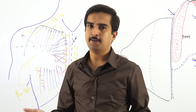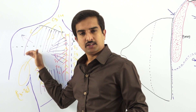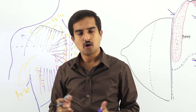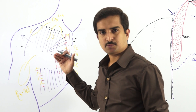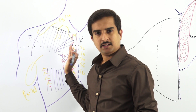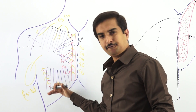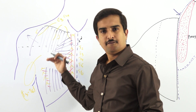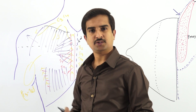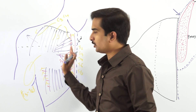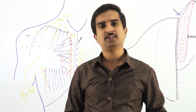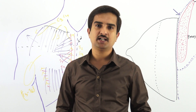Infralaterally, the axilla has a deep fascia called the axillary fascia. So infralaterally, the pectoral fascia blends with the axillary fascia. In summary, the attachments of the pectoral fascia are: superiorly to the clavicle, anteriorly to the sternum, inferiorly continuing with the fascia of the thorax and blending with the rectus sheath, suprolaterally continuing with the fascia of the deltoid, and infralaterally blending with the axillary fascia.